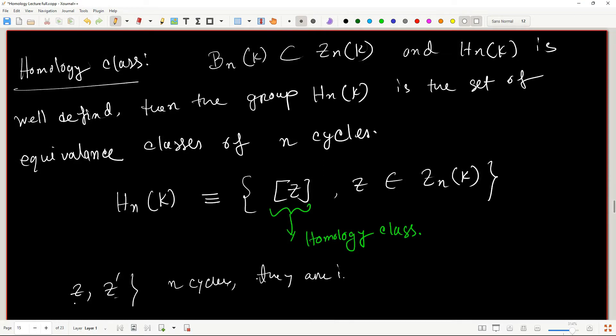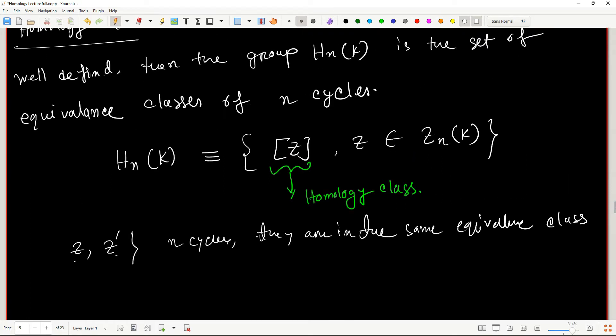So we say that they are in the same equivalence class if and only if Z minus Z prime belongs to the BN of K.